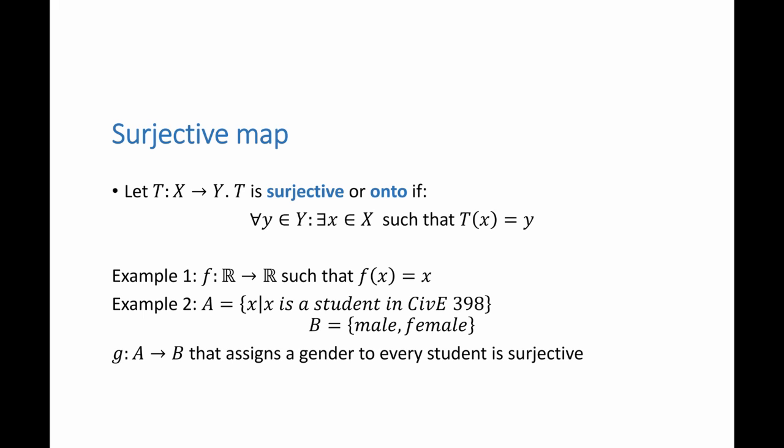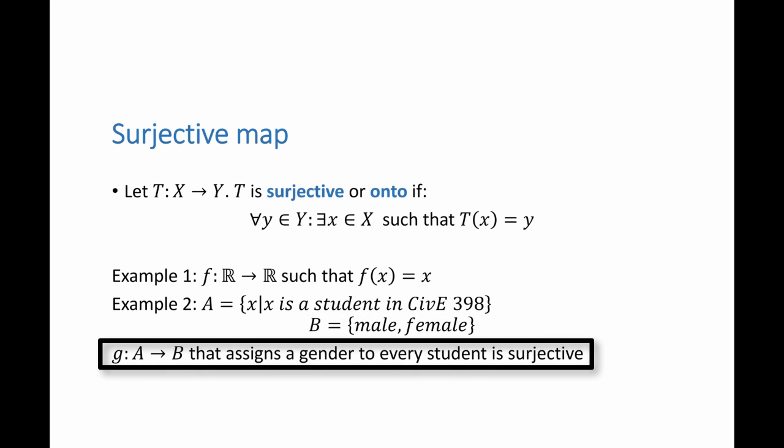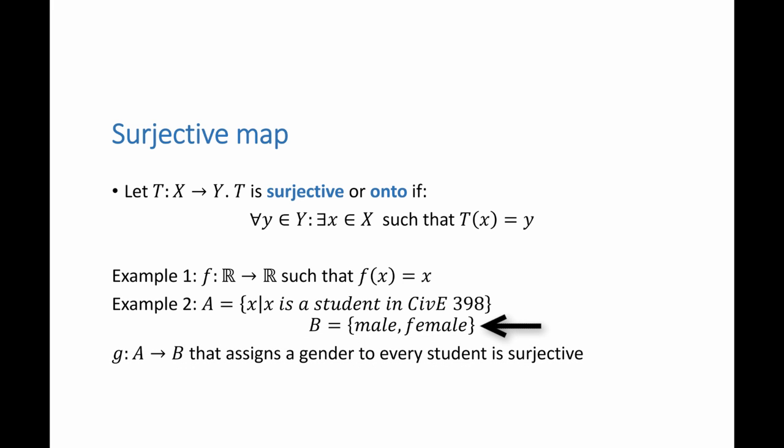Another surjective map, if I consider A to be all the students in CV 398 and if I consider B as the set that has male or female and if there is a map that assigns every student their gender, then this map is surjective because the set B, males and females, is covered by all the students in CV 398.